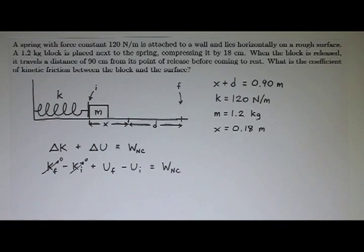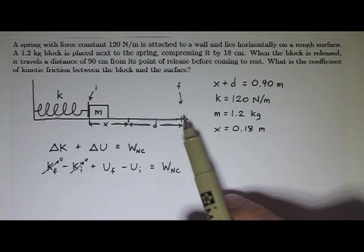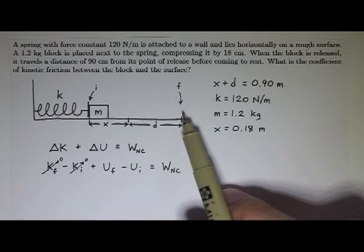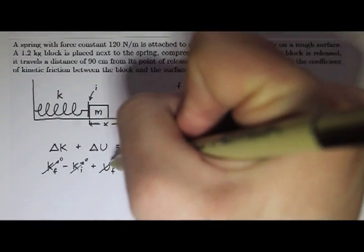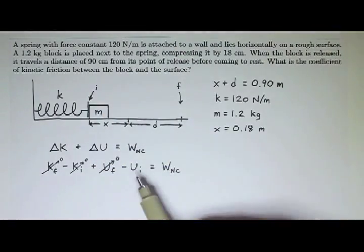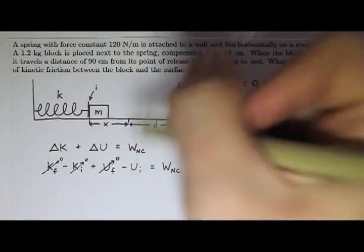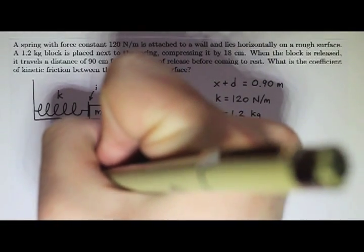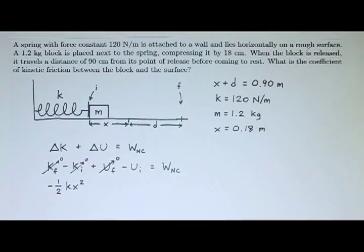I do have some potential energy though. Now, final potential energy, well, once it's over here, I don't have any gravitational potential energy and the spring by that point will not be compressed anymore. So I don't have any final potential energy, but I do have some initial potential energy. That would be elastic potential energy. So that's negative initial potential energy, so that must be negative one-half kx squared.